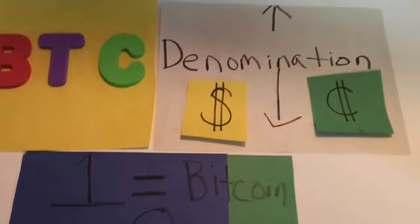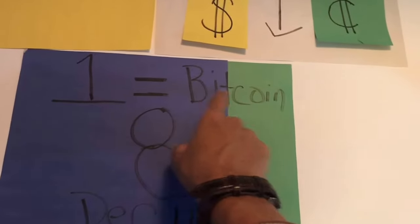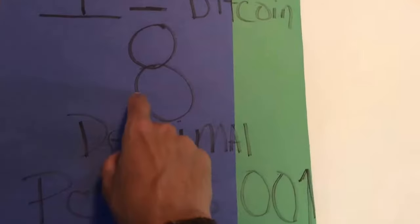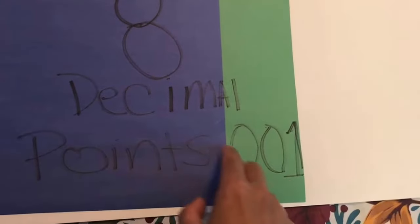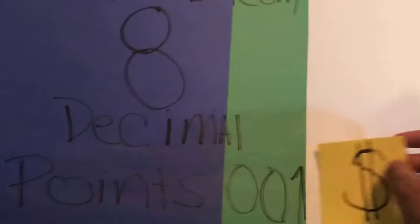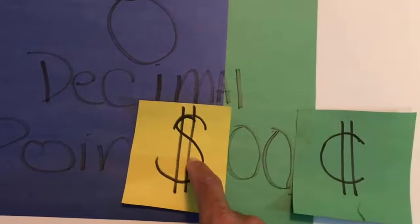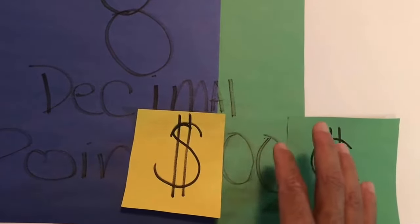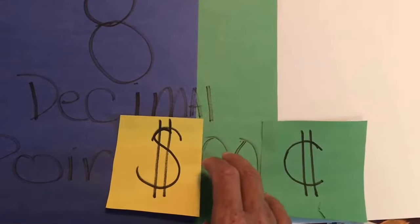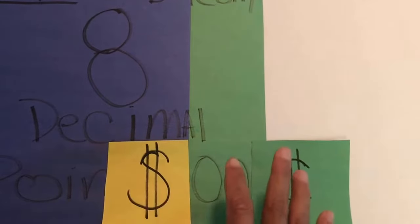With Bitcoin, one whole unit equals one Bitcoin, broken down into eight decimal points. The dollar-and-cents system only has two decimal points. In Bitcoin, the majority of the value sits on the decimal side — you have a penny, a nickel, a dime, and a quarter that together make a whole dollar, but Bitcoin's breakdown is far more granular.